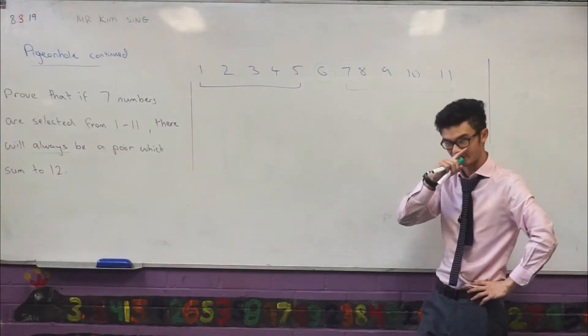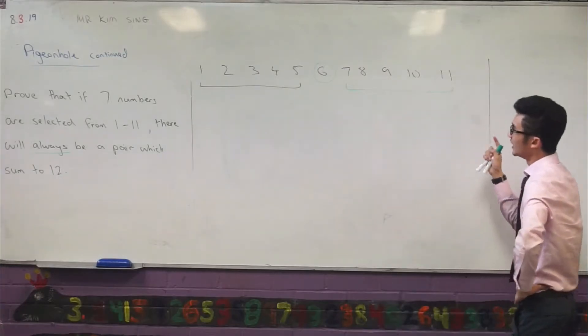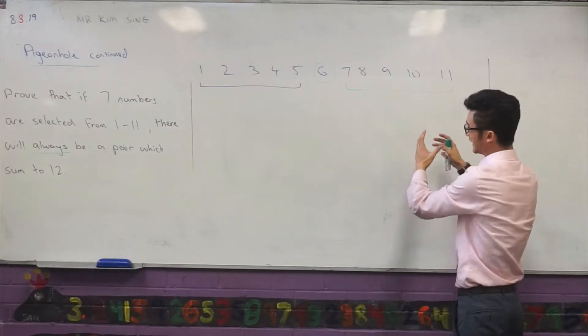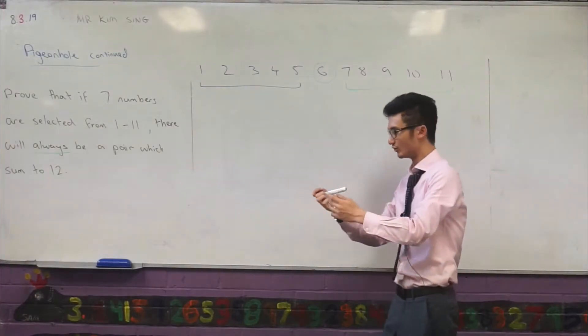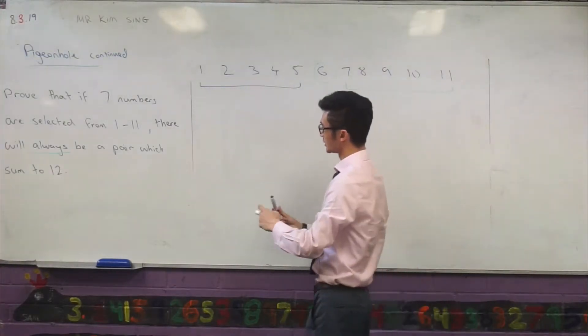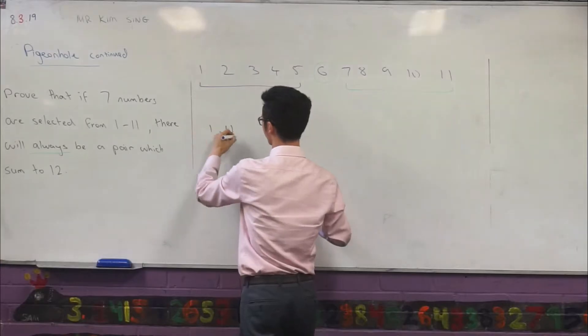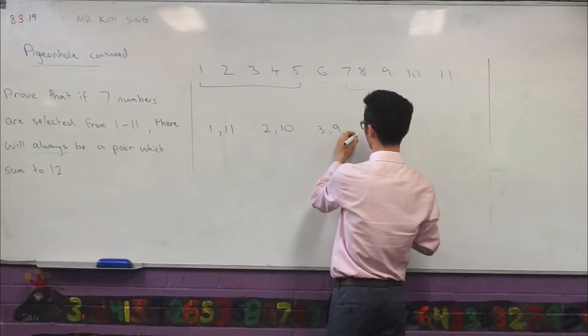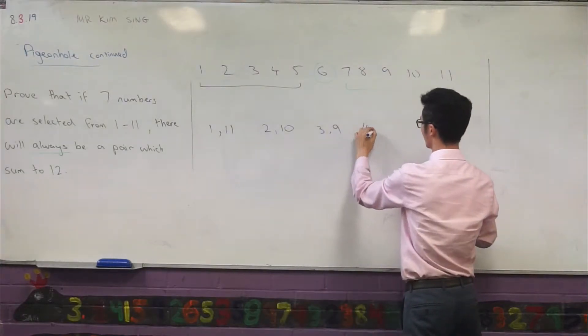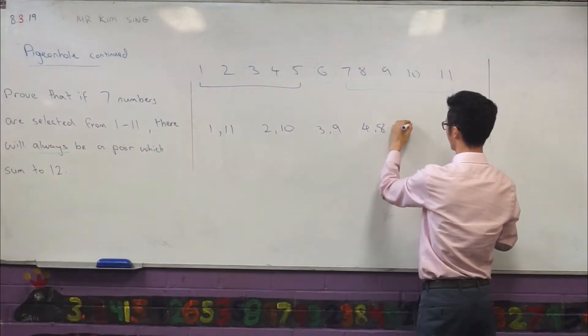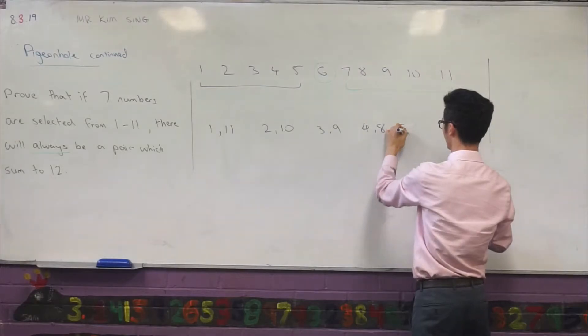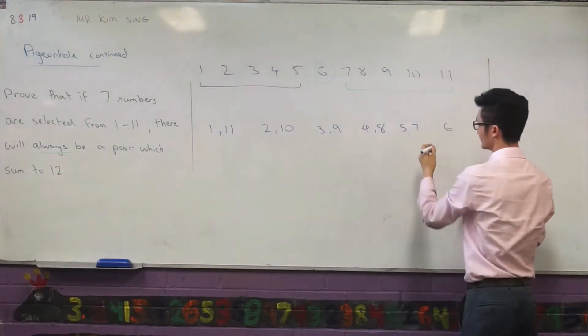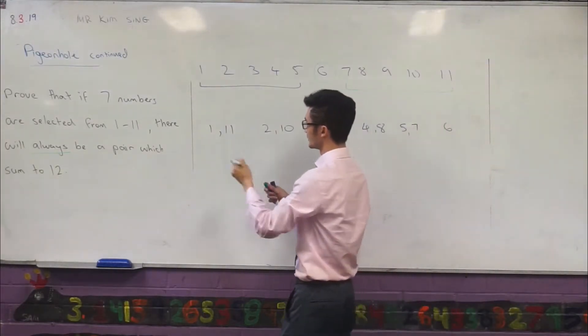So we'll park that there for a moment. But if you think about it, if you group these up into pairs, let's see how that would look. So if I group them of the pairs which sum to 12. So here's my groups here.